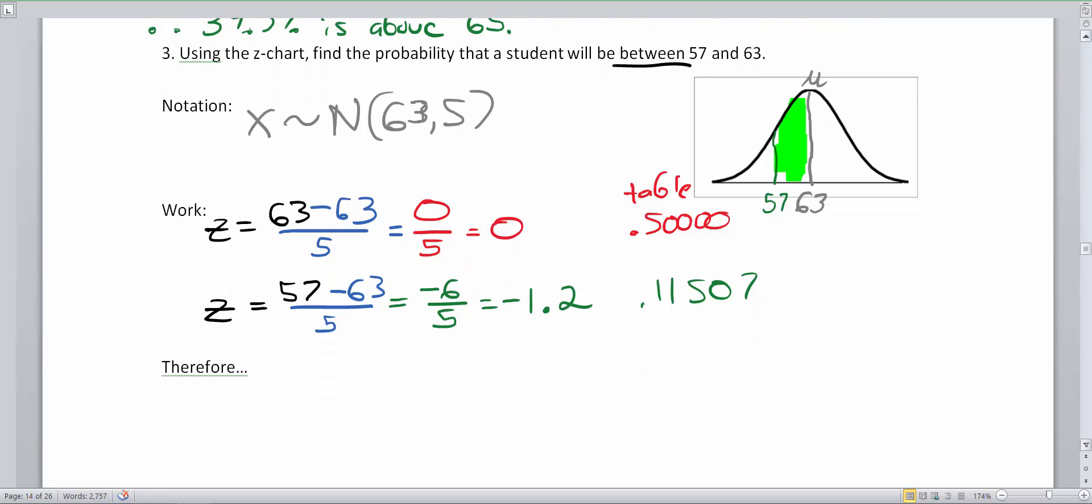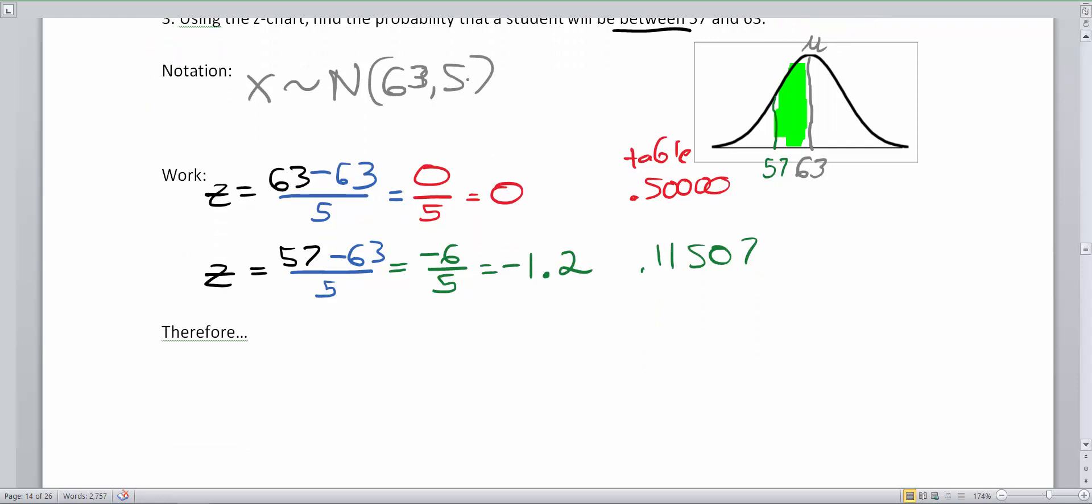We're almost done with this problem, but what we have to do is find the space between these two table percentiles. To do that, we need to subtract. It makes sense because if we're going from the middle all the way to the left and we chop off this white section, which is what we're doing with the subtraction, then we'll get the correct answer. So therefore, you always take the big percentage and subtract the small percentage. Never subtract the z-scores.